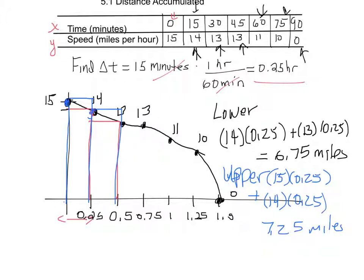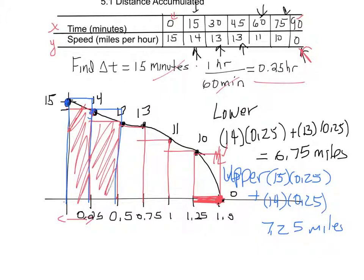Now if I want the estimate for the entire 90 minutes rather than just the first half hour, I go back to my lower estimate and connect all the rectangles. The last rectangle — the one at the 90-minute point — is flat because the speed at that time is zero, so its area is just zero. To get the full lower estimate, I find the area of each rectangle and add them all together.